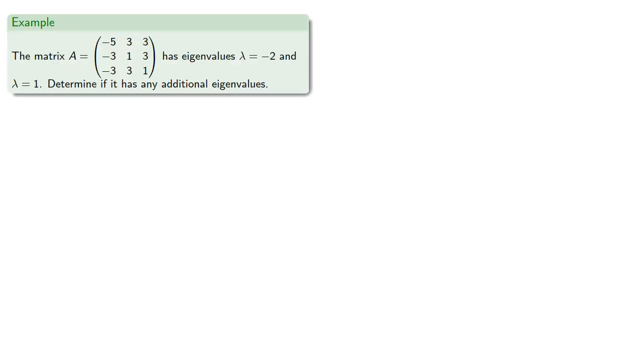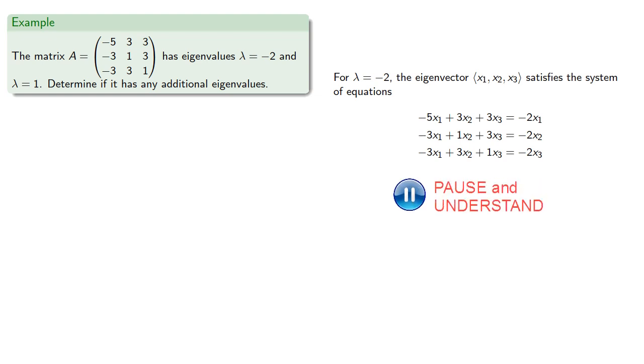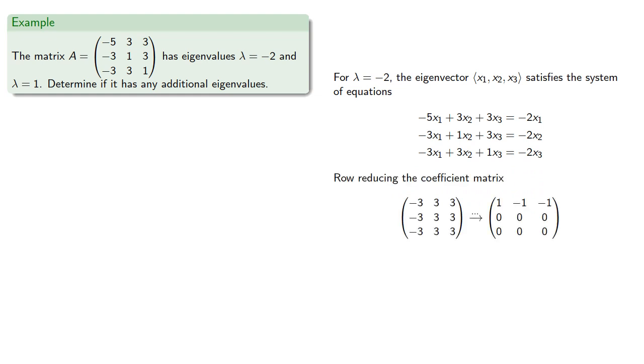So suppose we know a matrix has eigenvalues lambda equals negative 2 and lambda equals 1. Let's see if we can find any additional eigenvalues. So for lambda equals negative 2, the eigenvector satisfies the system of equations. Row reducing our coefficient matrix gives us two free variables. And so we can parameterize our components. And for lambda equals negative 2, the eigenvectors are a linear combination of two eigenvectors.